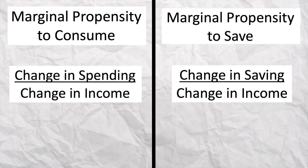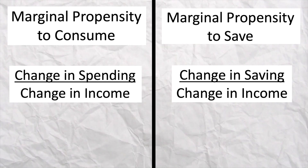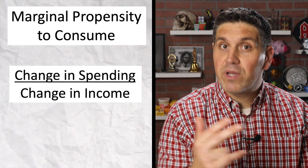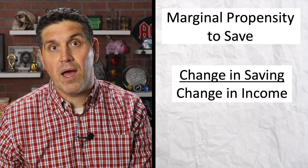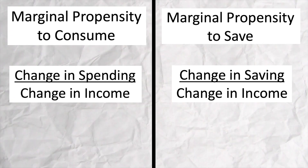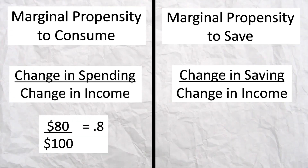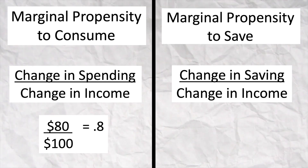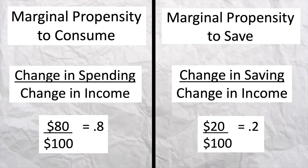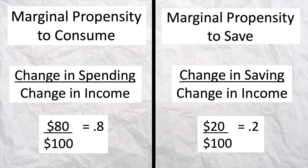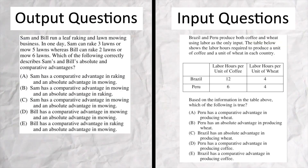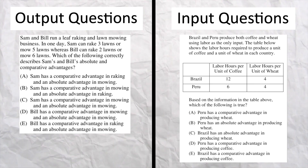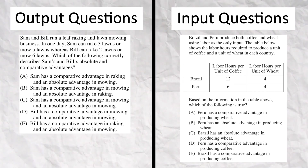Another example is the marginal propensity to consume and the marginal propensity to save. One is how much people consume of new income, and the other is how much people save of new income. They always add up to one — so if you spend 0.8 or 80% of new income, that means you must be saving 0.2 or 20%, and it all adds up to one or 100%.